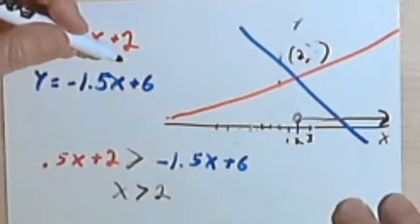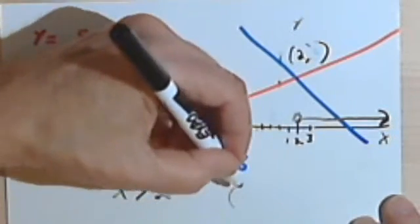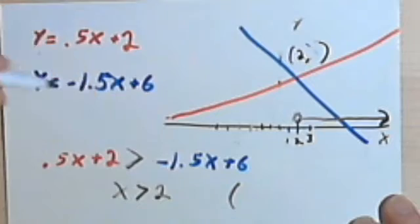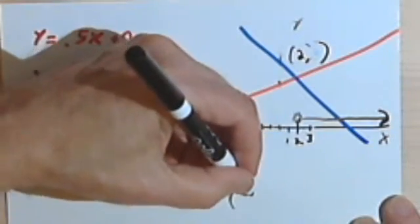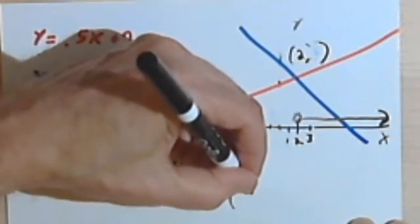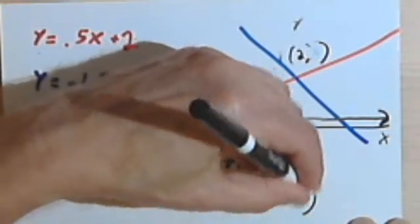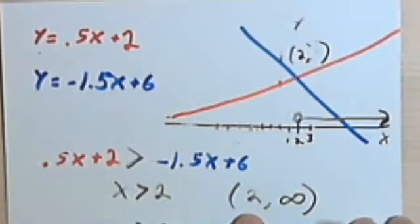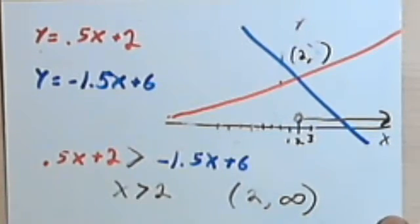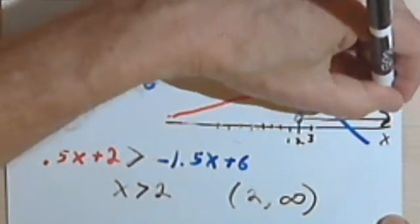If I had to write it in interval notation, I would use the interval rounded bracket, rounded parentheses, to infinity, because basically I'm starting just past the 2 and I'm going on to infinity. This line here goes to infinity.